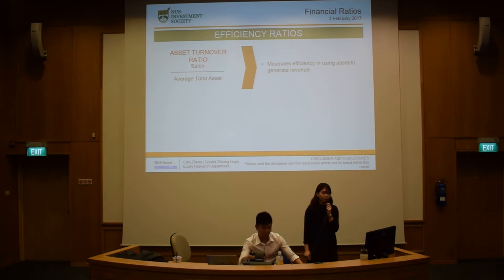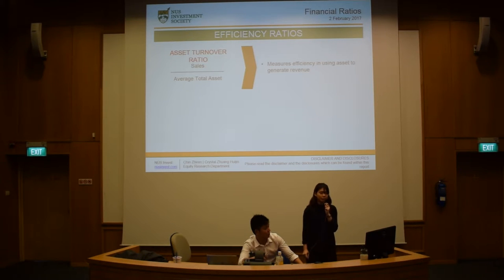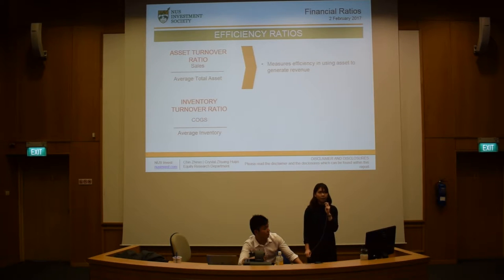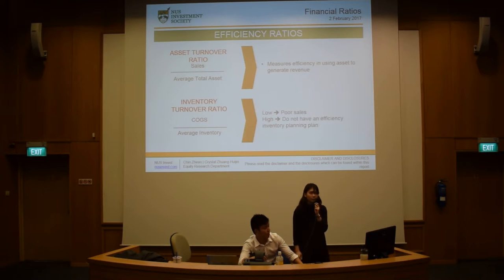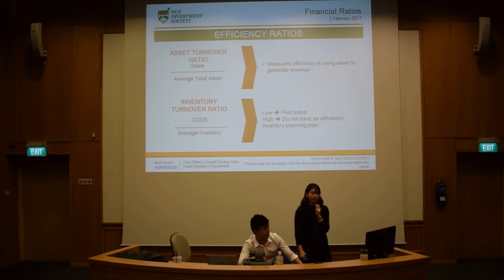Now we move on to efficiency ratios, the first being the asset turnover ratio, derived by sales over average total assets. It measures the efficiency in using assets to generate revenue. The next one is the inventory turnover ratio, which is quite important especially for investments in consumer discretionary companies. It is cost of goods sold over average inventory. A low inventory turnover ratio shows the company is having poor sales, while a high inventory turnover ratio may indicate the company does not have an efficient inventory planning plan.